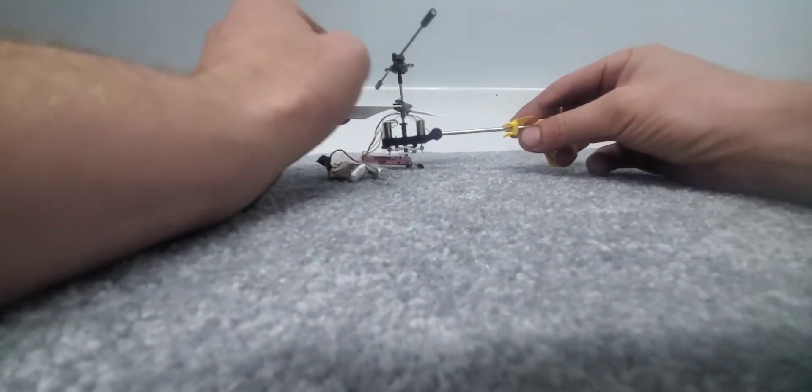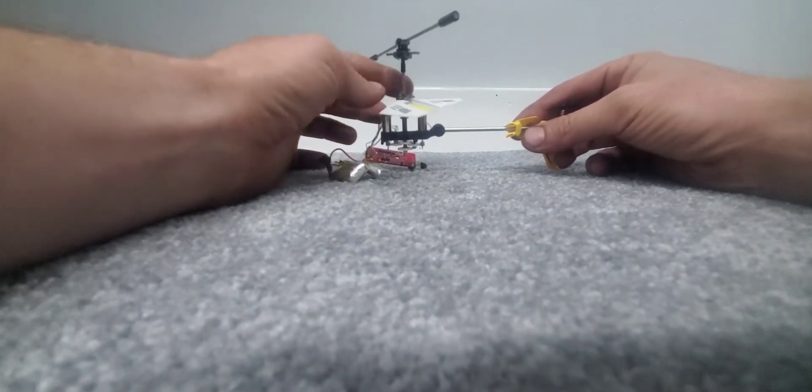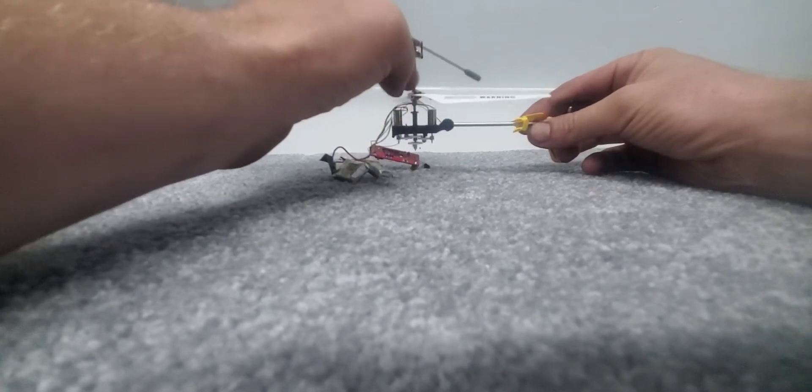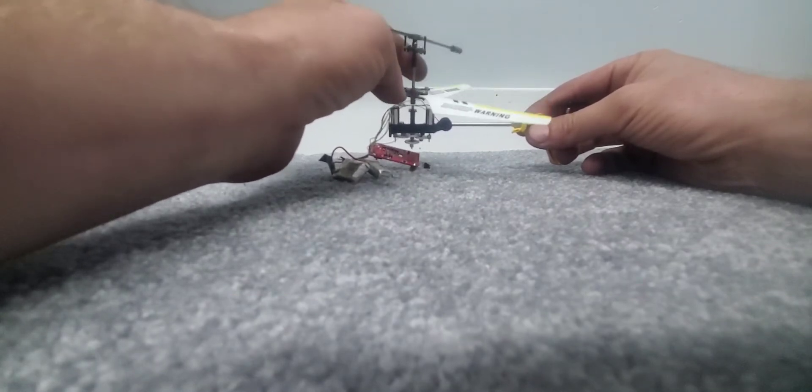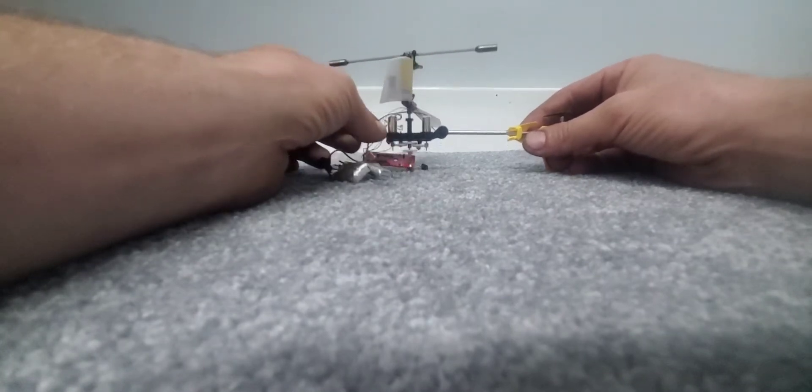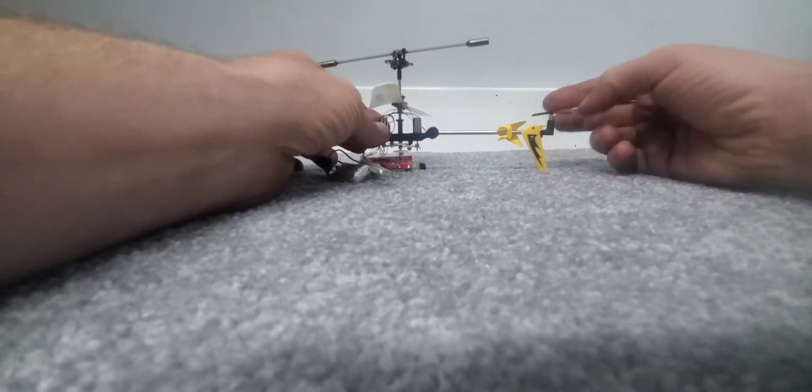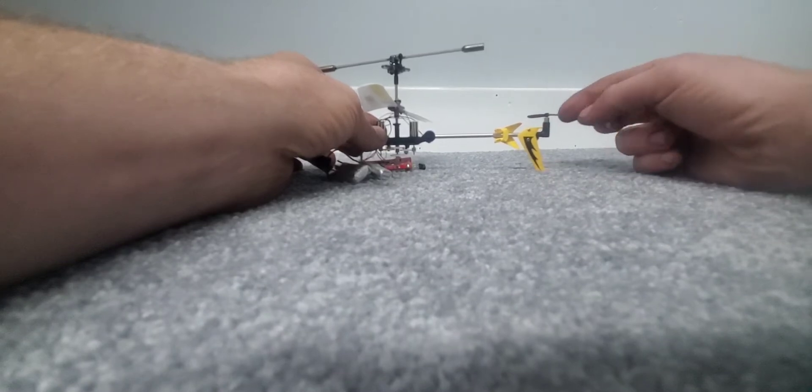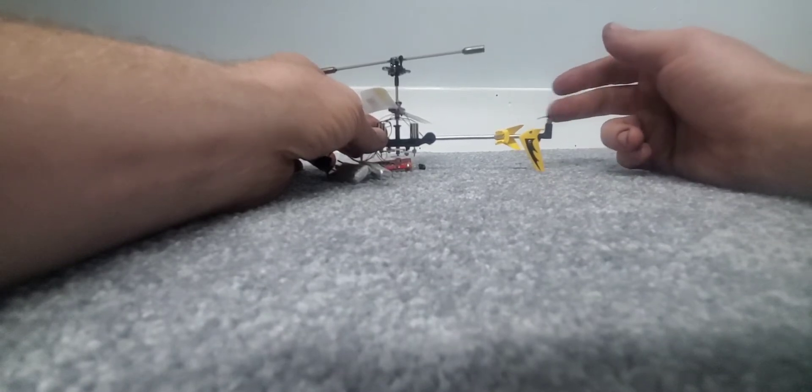So here we have the rotors. The main rotor spins in a counterclockwise direction and that creates the lift, lifts it off the ground. You have a tail rotor over here.